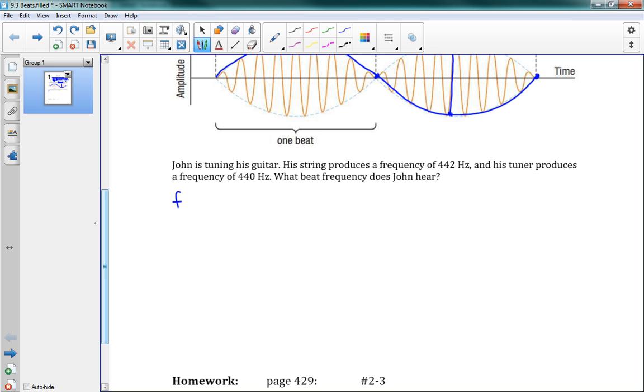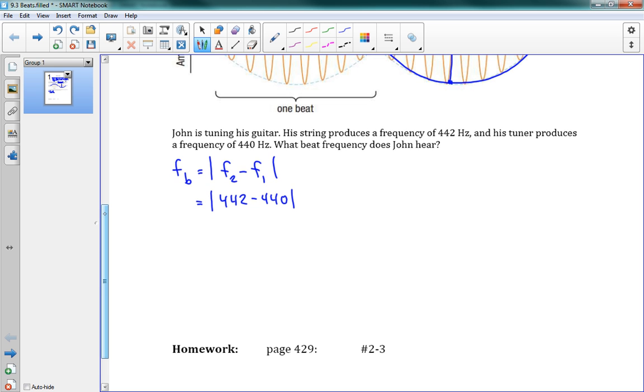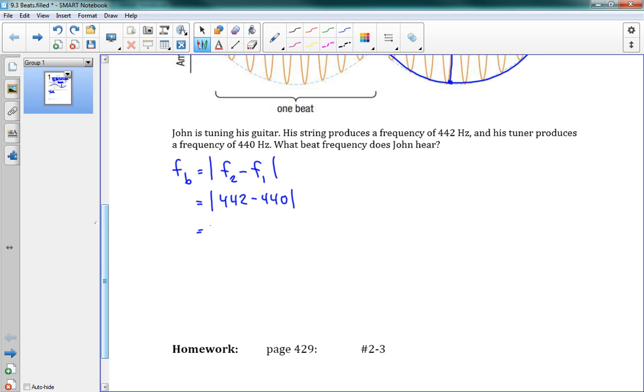Well, our equation FB is equal to the magnitude F2 minus F1. And notice magnitude, it just means we take the absolute value, so there's no negatives here. Okay, so I can take my second frequency, 442, minus my first frequency, 440. It doesn't matter the order of these. I could have done 440 minus 442. It gets the same result of 2 hertz.